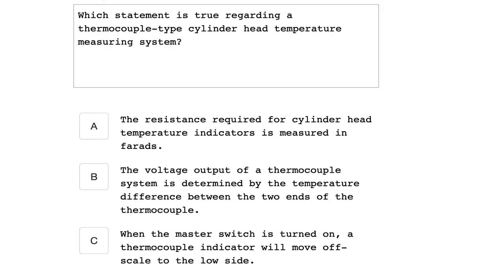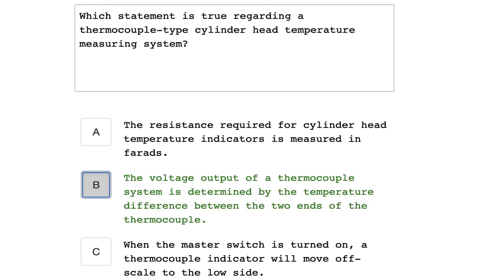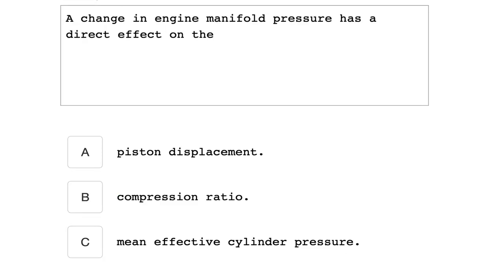Which statement is true regarding a thermocouple type cylinder head temperature measuring system? The voltage output of a thermocouple system is determined by the temperature difference between the two ends of the thermocouple. A change in the engine manifold pressure has a direct effect on the mean effective cylinder pressure.